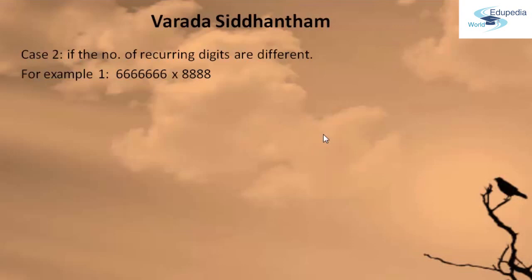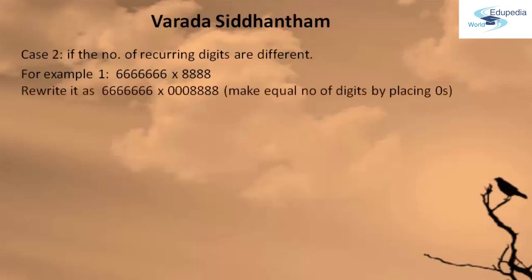So whenever you face this type of situation, what you are going to do is make an equal number of digits by keeping that many zeros in front of the multiplier.